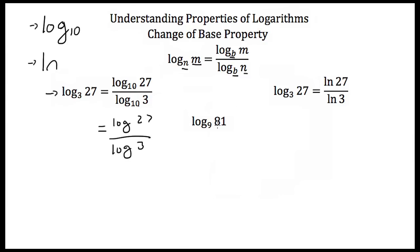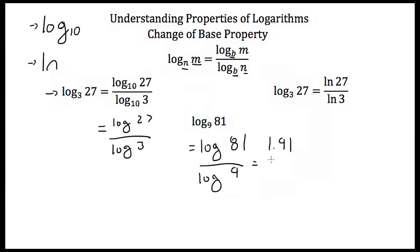Let's find out what the log base 9 of 81 is equal to. Using the change of base property with the common log, this equals the log base 10 of 81 divided by the log base 10 of 9. The log of 81 is approximately 1.91, and the log of 9 is approximately 0.95. Dividing, we get 2. This is useful because most calculators only have a log button or a natural log button, so the change of base property lets you evaluate any logarithm.